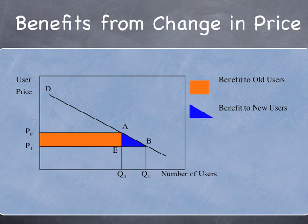So we generally look at the change in consumer surplus rather than the total consumer surplus. We say, what happens if the price goes down from P0 to P1? Everybody who's already using it at P0 continues to use it at P1, and they get a benefit of that rectangle. The new users get a benefit of the triangle. If the price drops, more people will use the system. This gives us the rule of one half, which we use to find the area of a trapezoid. For the triangular area, the area is one half base times the height, where the base is Q1 minus Q0 and the height is P0 minus P1.